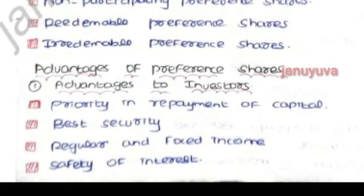Next, we have advantages. Preferences in preference shares — advantages to the investors. Investors have more preference and priority. Investment in preference shares is considered to be the best security. If you have a dividend, preference shareholders can take it first before equity shareholders.